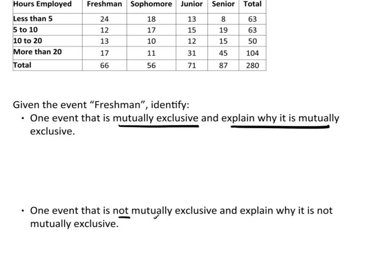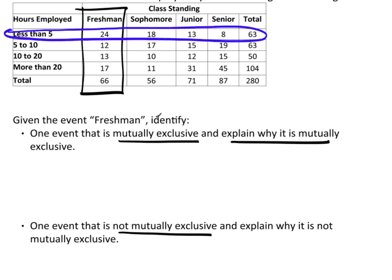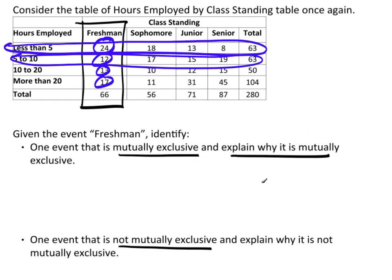Now I want to pick an event that is not mutually exclusive and explain why. We're dealing with freshman, and any event that has something in common will not be mutually exclusive. 'Less than 5 hours' is not mutually exclusive because they share 24 outcomes — there are 24 people who were both freshman and reported working less than 5 hours. Any row would not be mutually exclusive because each row shares something. So: if two events are mutually exclusive, if one happens the other can't. If they're not mutually exclusive, if one happens the other could — it doesn't mean it did, it means it could happen.